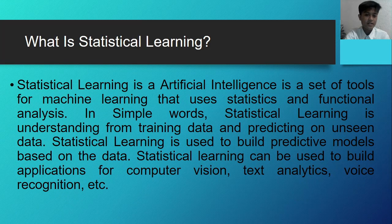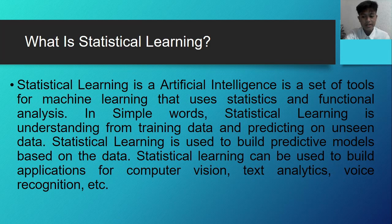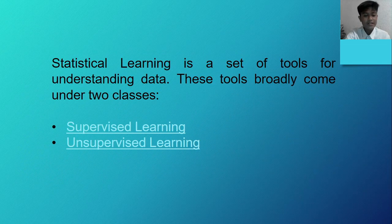So what is statistical learning? Statistical learning is an artificial intelligence tool — a set of tools for machine learning that use statistics and functional analysis. In simple words, statistical learning is understanding from training data and predicting on unseen data. Statistical learning is used to build predictive models based on the data. It can be used to build applications for computer vision, text analytics, voice recognition, and more. So statistical learning is a set of tools for understanding data.